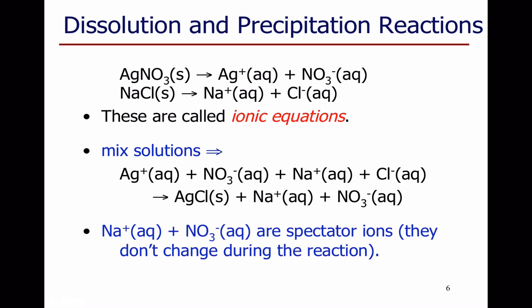So the sodium ions and the nitrate ions are called spectator ions. They don't do anything. They just spectate. They don't change during the reaction. Because they're there before and they're there after, it makes sense not to write them, because they're not doing anything. So I cross them out. I cancel them from the two sides of the chemical equation.